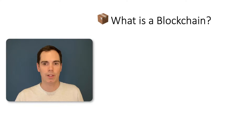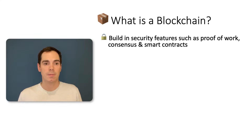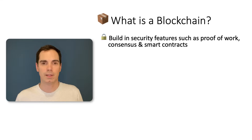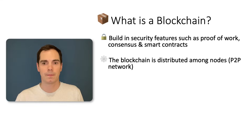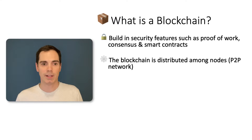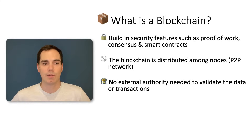What else is a blockchain and what is the big benefit of it? It has built-in security features such as proof of work, consensus, and smart contracts. Please take a look at the mentioned video for more details. The blockchain is a distributed technology amongst nodes with a peer-to-peer network. It has no central authority needed to validate the data of the transactions.